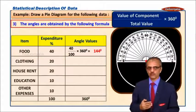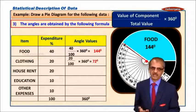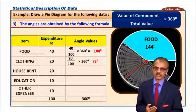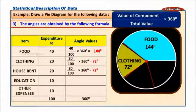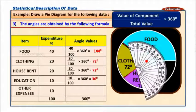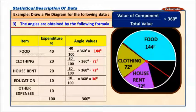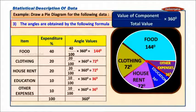For clothing, we have to draw the angle of 72 degrees. For house rent, again 72 degrees. For education, the angle is 36 degrees. And for other expenses, the angle is 36 degrees. So this is what the pie diagram is all about.